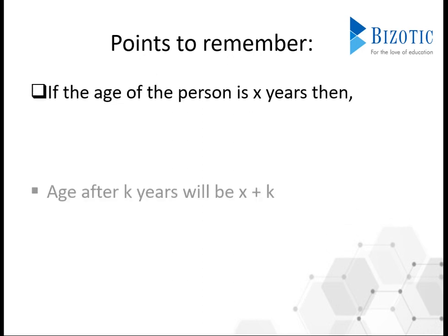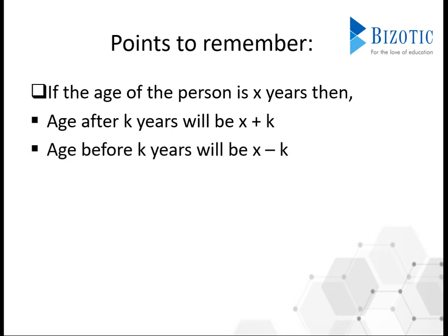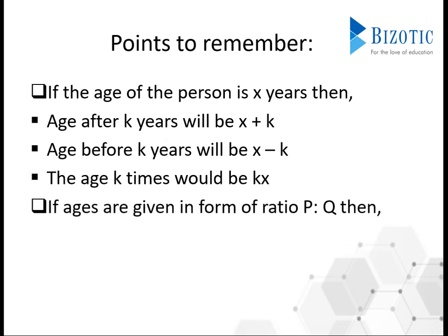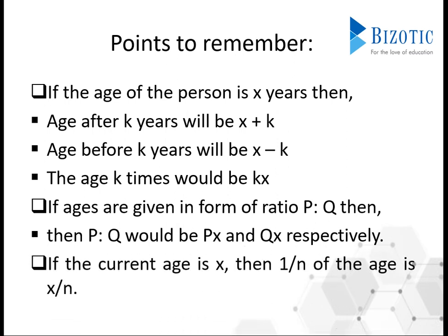If the age of a person is x years, then the age after k years will be x plus k. And the same way, the age before k years will be x minus k. And k times will always be k into x. If the ages are given in the form of ratios like p to q, then the ages will always be px and qx. And if the current age is x, then 1 by n of the age is x by n.